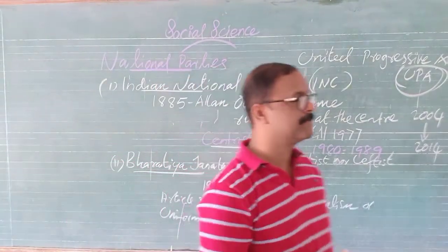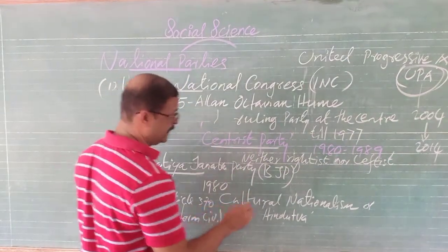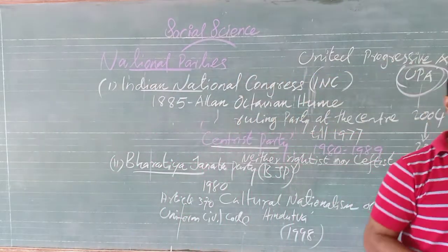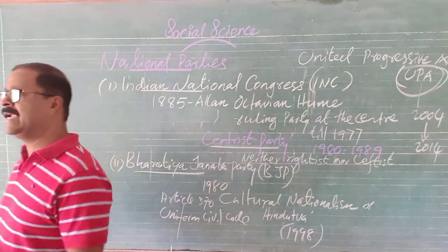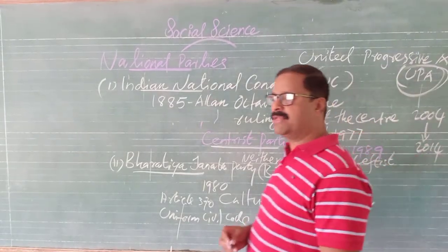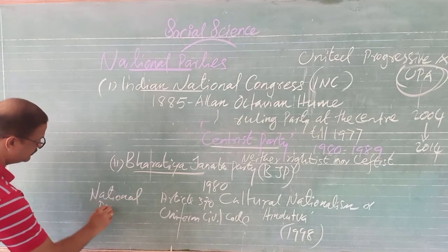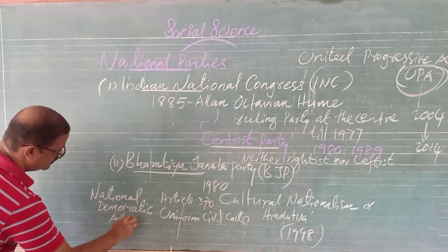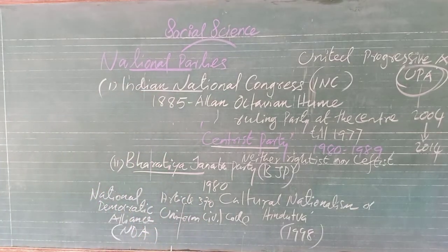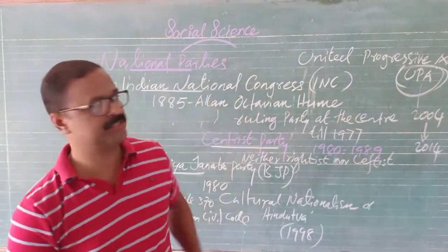This party's support base increased significantly after 1990. It first came into power in 1998. Initially the party was concentrated in some northern and eastern states, but presently its presence can be seen throughout the country. BJP is presently the leader of the National Democratic Alliance, or NDA, the ruling coalition of India under the leadership of Narendra Modi.